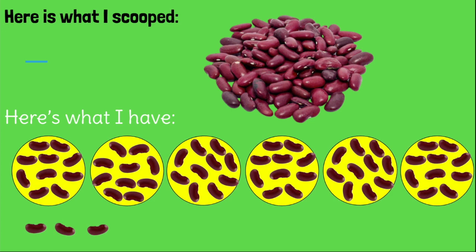Here's what I have. Did we scoop more than 50 beans, less than 50 beans, or exactly 50 beans? Write it on your white board. How do you know? That's right — it's more than 50 because you have 6 cups there. And with 10 in each cup, that's 60, and then there's some extra ones. Exactly. If we had 5 cups and no extras, that would be 50 because 10, 20, 30, 40, and 50.